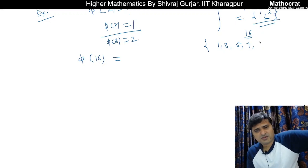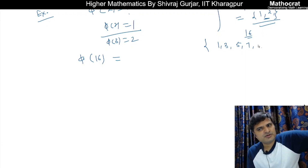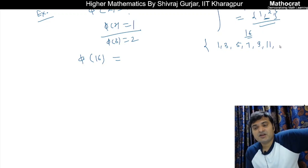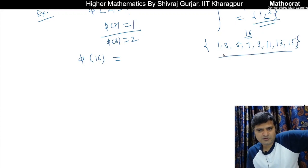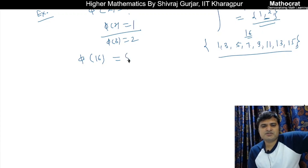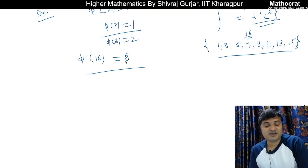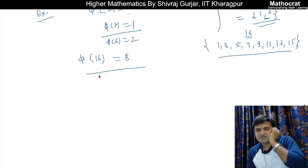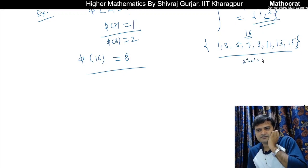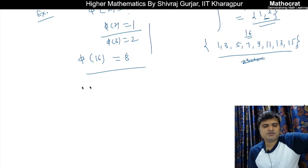Continuing: 8 is excluded. 9 is fine since 9 = 3×3 and 16 = 2^4, so no common factor. 10 has common factor 2 with 16. 11 qualifies. 12 shares factor 2. 13 qualifies. 14 shares factor 2. 15 = 3×5 has no common factor with 16, so 15 qualifies. Counting all qualifying numbers — 1, 3, 5, 7, 9, 11, 13, 15 — we get 8. So φ(16) = 8.